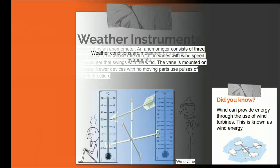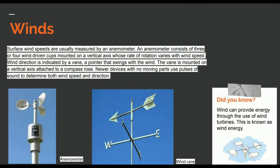On to winds and the weather instruments for winds. Winds are divided into two categories: speed and direction. Wind speeds are measured using an anemometer. An anemometer has three or four wind-driven cups mounted on a vertical axis running from north to south. Its rate of rotation varies based on the speed of the wind, and this is how it measures wind speed.